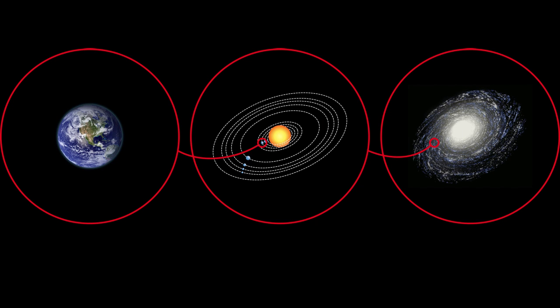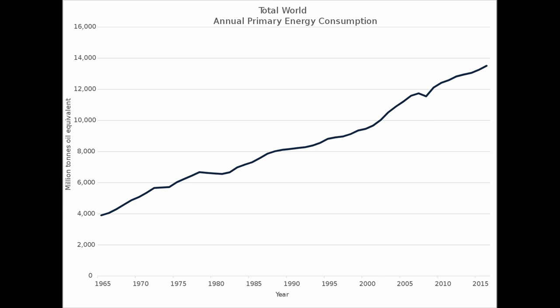Type 1 means to harness all the energy that falls on the planet from its parent star. I know it sounds all fancy, but actually we humans are already at 0.73 on the Kardashev scale.